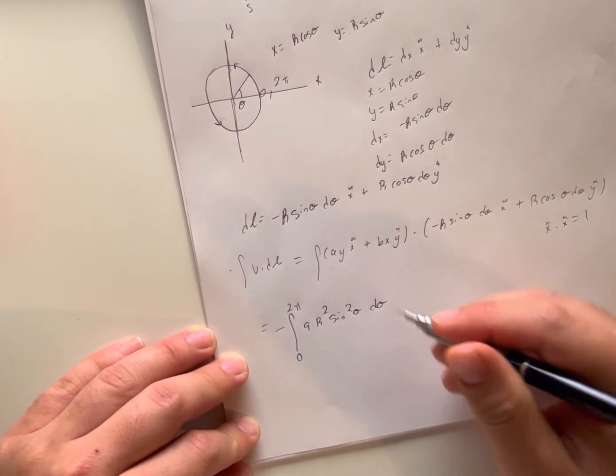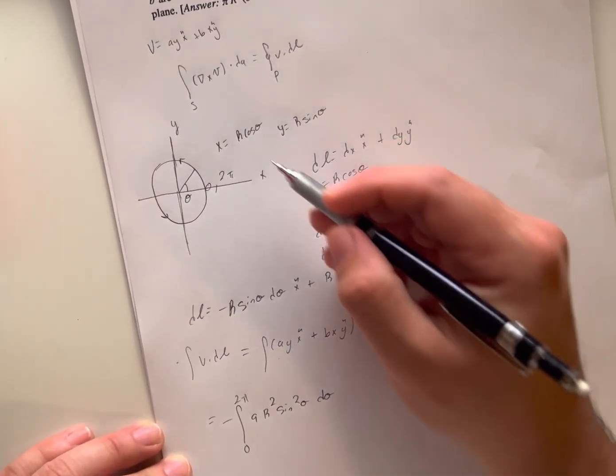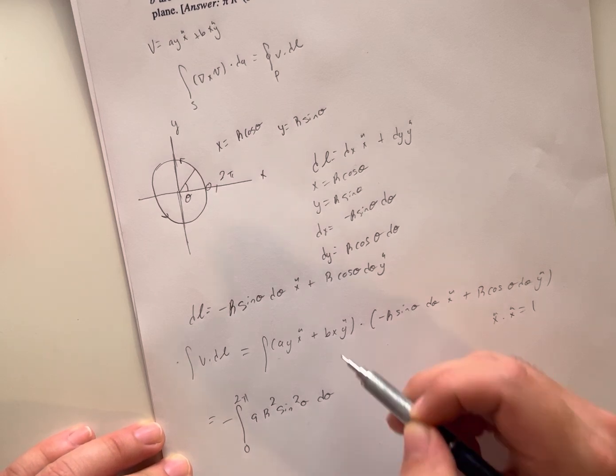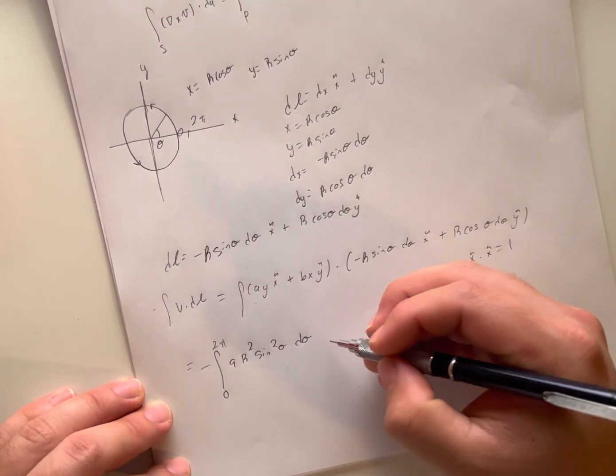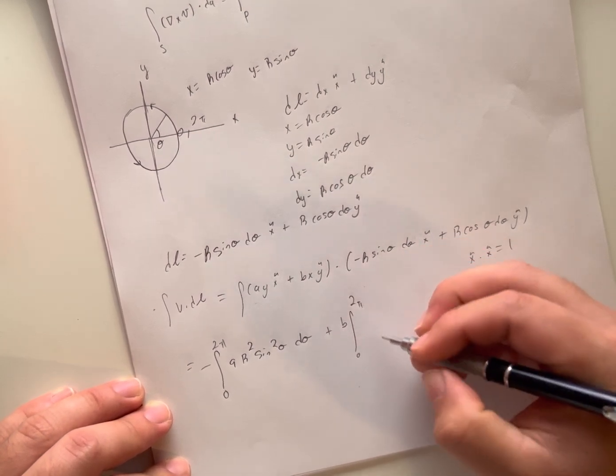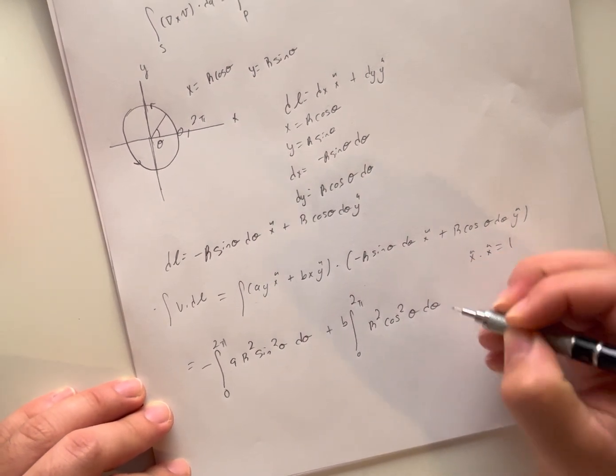This leads us to create the equation: integral from 0 to 2*pi of a*R^2*sin^2(theta)*d-theta. We substitute the y here with R*sin(theta) and we substitute the x here with R*cos(theta) to get the following.